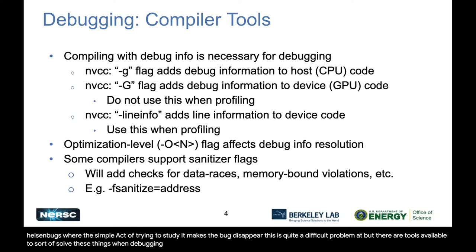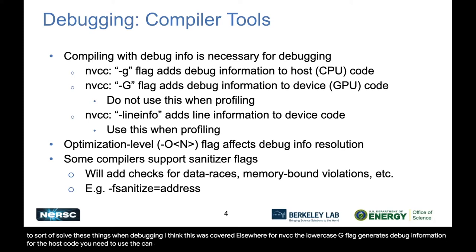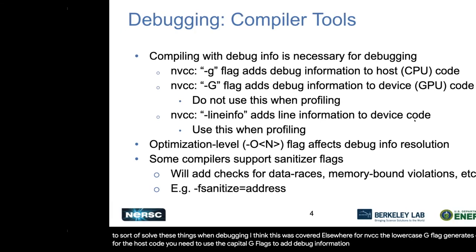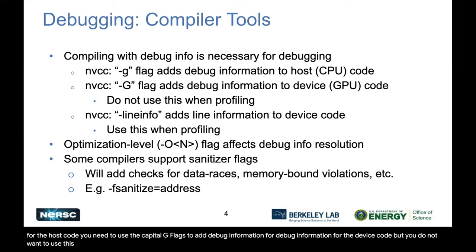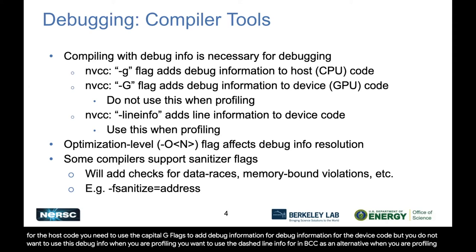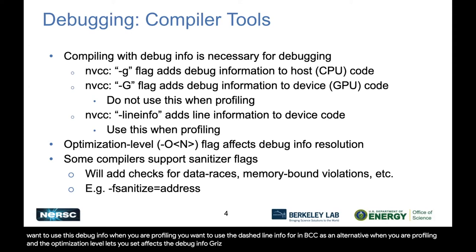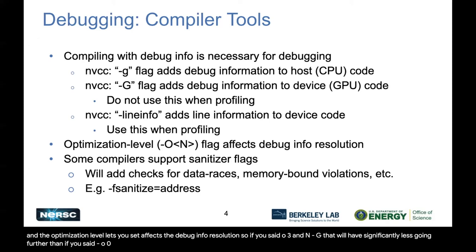When debugging, for NVCC, the lowercase -g flag generates debug information for the host code. You need to use the capital -G flag to add debug information for the device code, but you do not want to use this debug info when you are profiling. You want to use the -lineinfo flag for NVCC as an alternative when you are profiling. The optimization level you set affects the debug info resolution — if you set -O3 and -g, that will have significantly less debug info than if you set -O0 combined with -g.